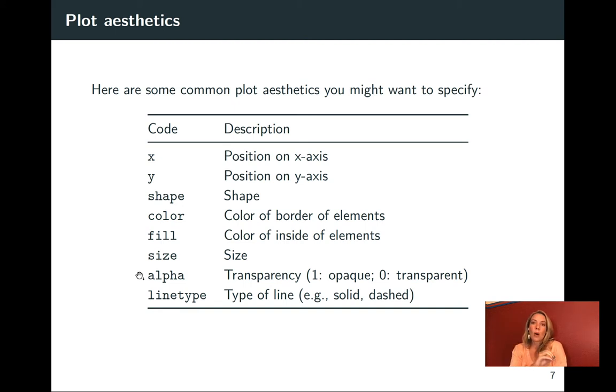You can also set the size of some of your different elements and you can set transparency with alpha. For this, one means opaque and zero means completely transparent. But you can pick a value in between to have something that's slightly transparent. And that can be really helpful if you're plotting a lot of data because then you'll be able to see very clearly where their points that overlap. And then there are also some aesthetics that are very specific to the type of thing you're creating. So, for example, if you're creating a plot with a line in it, you can use line type to set whether it's a solid or dashed line.